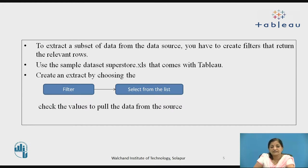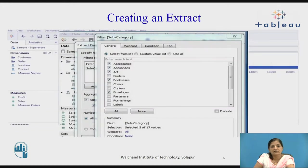Check the values to pull the data from the data source. The screenshot shows that a list of values is displayed and you have to check the checkboxes. In this particular example, 5 values have been selected for the extract. Below there is a summary shown that 5 out of 17 values have been extracted for the creation of an extract.